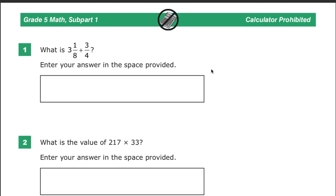Everyone, so this is the tenth-ready fifth grade math practice test. Question number one, in this little picture here with the oldest calculator that you'd get free to bank ever marked out, means that this is a no calculator section. The question says, what is three and one-eighth plus three-fourths? Enter your answer in the space provided.